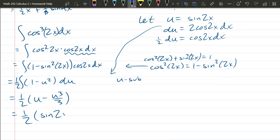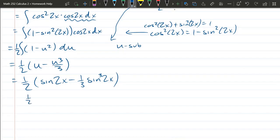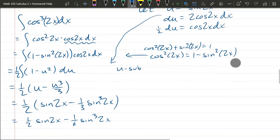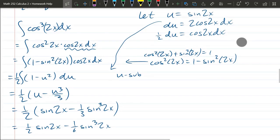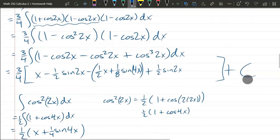Easy antiderivative here. 1 half u minus u cubed over 3. Unsub, so u is sine 2x. And that's sine cubed 2x. Distribute the half.